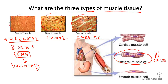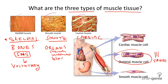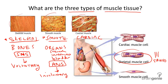The next type of muscle tissue is called smooth muscle tissue. Smooth muscle lines the inside of hollow organs, such as the stomach, intestines, and the bladder, among others. Smooth muscle, since it's controlled by the autonomic nervous system, is involuntary, meaning you cannot control this movement. One way to distinguish smooth muscle from other muscle types is looking for its lack of striations, or stripes, in the tissue.